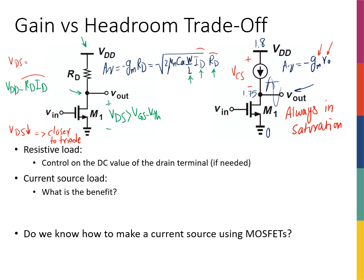The big advantage of the current source load circuit compared to the resistive load is that we can increase the gain without worrying about going into the triode region. The big question remaining is: how do I actually make this ideal current source on a chip? Just like I didn't want a battery to bias every transistor, I don't want an ideal current source for every transistor — I need to generate it using on-chip elements. That's what we'll address starting on the next slide.